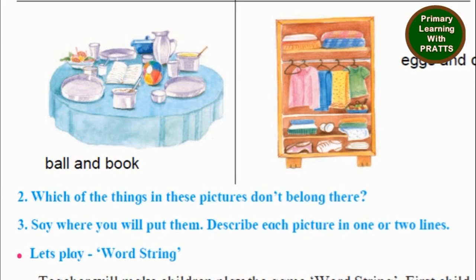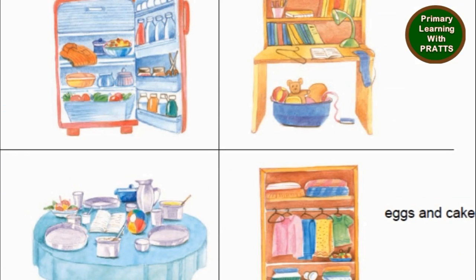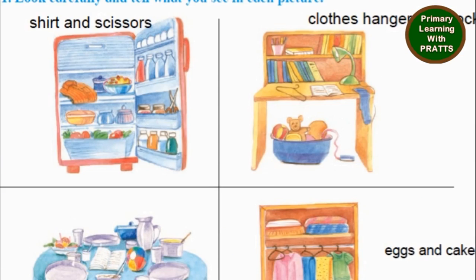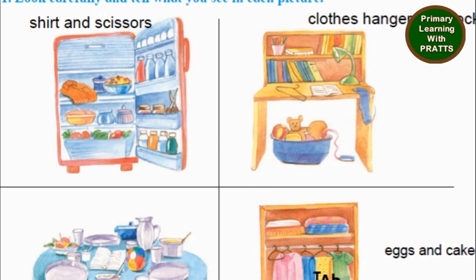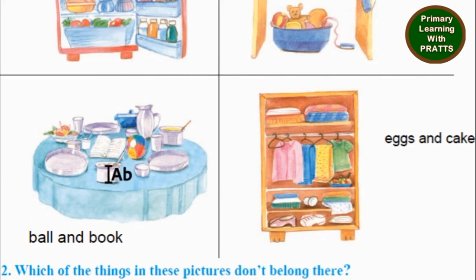The shirt and the scissors: the shirt will go in the cupboard, scissors will go on the study table. Clothes hanger and sock: both will go in the cupboard. Eggs and cake will go on the dining table. The ball will go in the toy basket. The book will go on the study table.